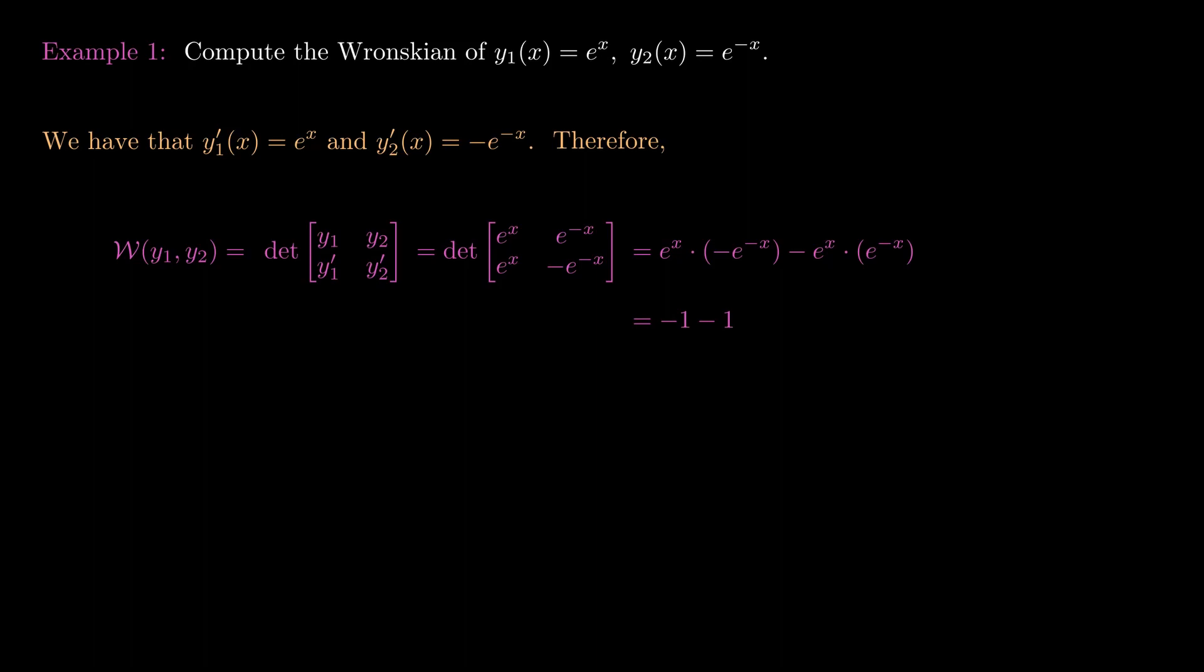And so as a consequence the Wronskian is equal to minus 2, and that's less than 0. In particular it's not equal to 0 anywhere. And so the standard theorem concerning Wronskians tells us that the functions e^x and e^(-x) are linearly independent.